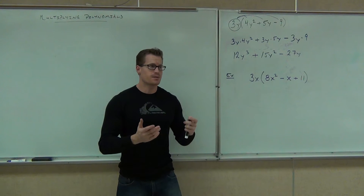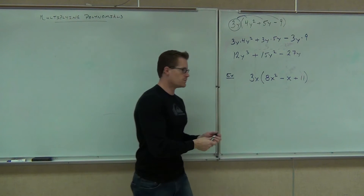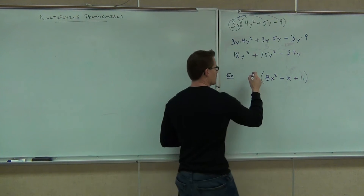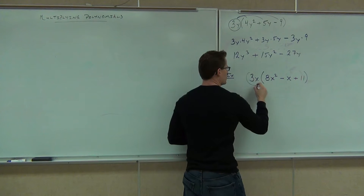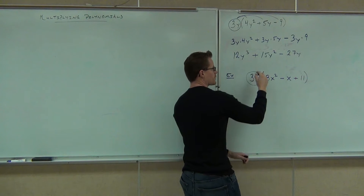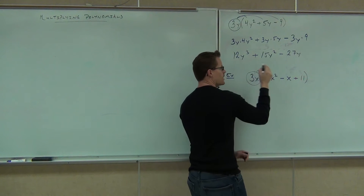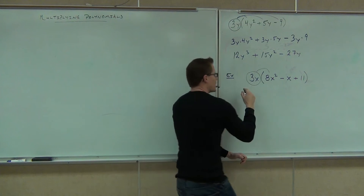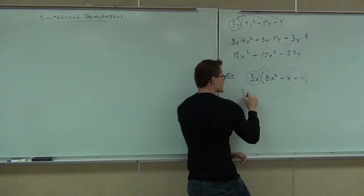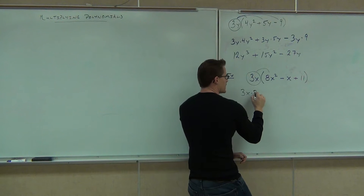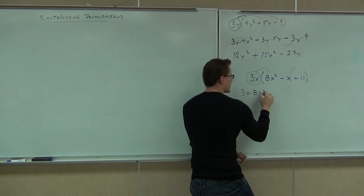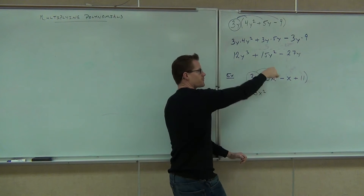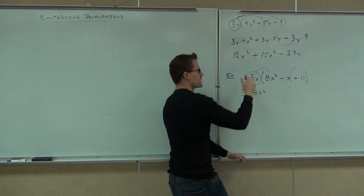Don't neglect the signs — make them work for you. We've got 3x times a positive 8x squared. I'm going to write that out: 3x times 8x squared. I've just done the first set of terms.